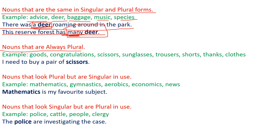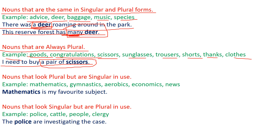Next, nouns that are always plural — they are always written as plural forms and don't have any singular forms. For example: goods, congratulations, scissors, sunglasses, trousers, shorts, thanks, clothes. These words do not have any singular form; they are always used in plural form. For example: 'I need to buy a pair of scissors' — you always use the word 'scissors'.